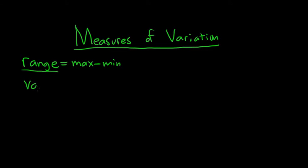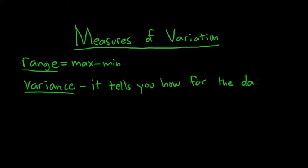The next measure of variation is called the variance. The variance tells you how far the data is from the mean on average. It's a loose definition. The bigger the variance, the farther away the numbers are from the mean.